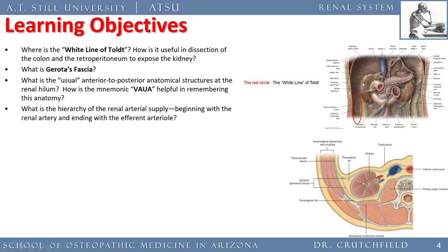Gerota's fascia is a very thin layer of fascia over the kidney — this retroperitoneal membrane. In cross-section, there's perinephric fat, an anterior membrane over the kidney, and a posterior membrane. Most of the time, the anterior fascia is actually fused with the retroperitoneal membrane — almost impossible to separate them. That's Gerota's fascia. We'll discuss why it's important in a moment.